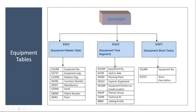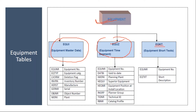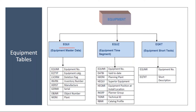First, we will talk about equipment tables. In our PM module, the main object is equipment. The most important table for equipment is EQUI — equipment master data. Another table is EQUSET. Another table is EQKT. There are a lot of tables but the most widely used ones are these. Some of the important fields include EQUNR — equipment number, EQTYP — equipment category, LVORM — deletion flag, HERST — manufacturer, and WERK — plant.